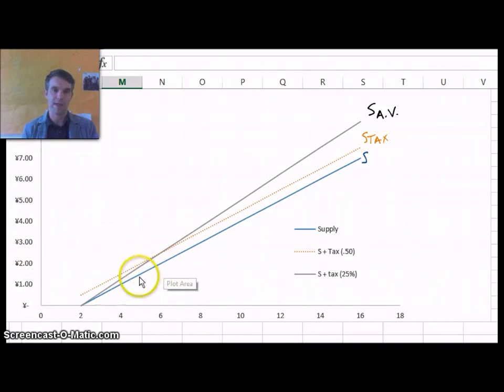Whereas the gray curve, which is the ad valorem tax, now it is shifted up by 25%. So what we see is that it is going to be steeper than the original supply curve, because at each point, it's 25% higher. So obviously, as we get further to the right, 25% is a greater amount.